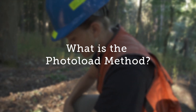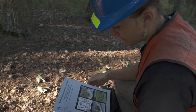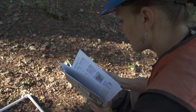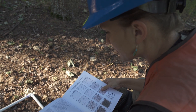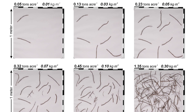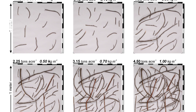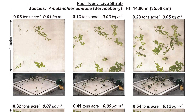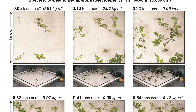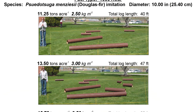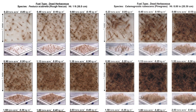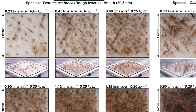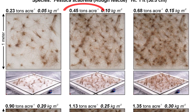The photo load method involves visually comparing fuel conditions observed in the field with a series of photographs depicting a range of fuel loadings. Photo load sequences are downward-looking and close-up oblique photographs showing graduated fuel loadings of synthetic fuel beds for each of the six fuel components. The weight of these synthetic fuel beds has been measured, so by comparing your fuel bed to the reference fuel bed, you'll get accurate approximations for the loading on your site.